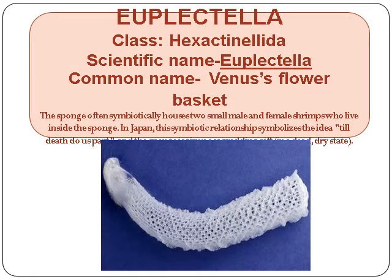Euplectella. Class Hexactinellida. Scientific Name: Euplectella. Common Name: Venus's Flower Basket. The sponge often symbiotically houses two small male and female shrimps who live inside the sponge. In Japan, this symbiotic relationship symbolizes the idea of 'till death do us part,' and the sponge is given as a wedding gift in a dead and dry state.